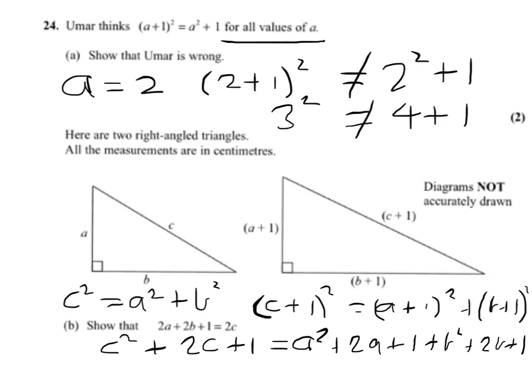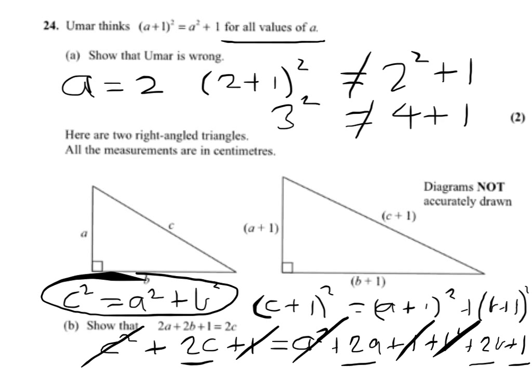We can cancel off our c² with a² + b², as we know from this part here that they are the same. And we've got a 1 here that can be cancelled off with one of the 1s here. That leaves us the result we want. We've got 2c equals 2a + 2b + 1. So that shows that the result holds.